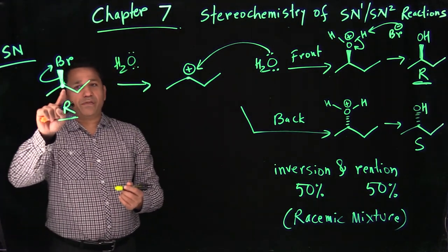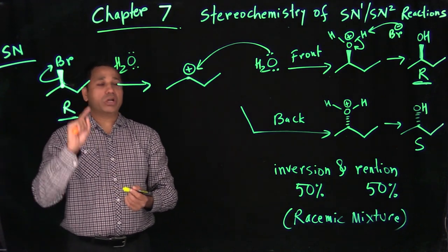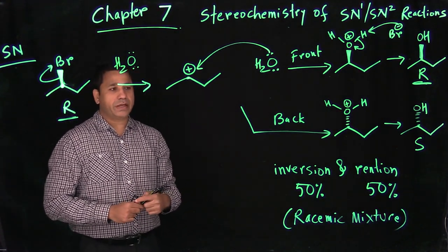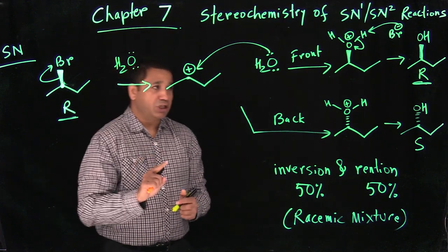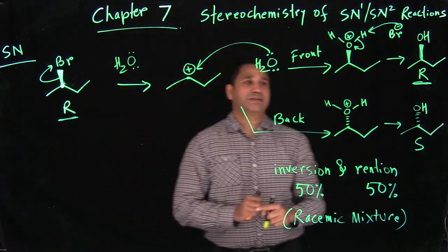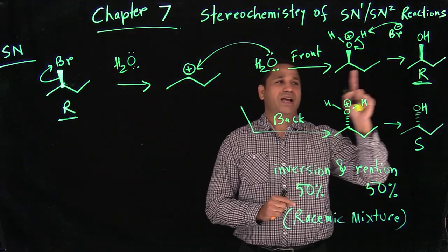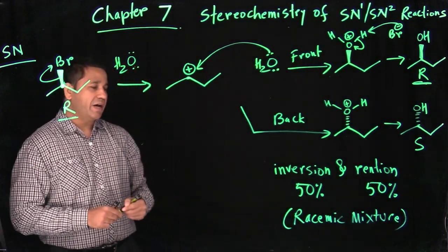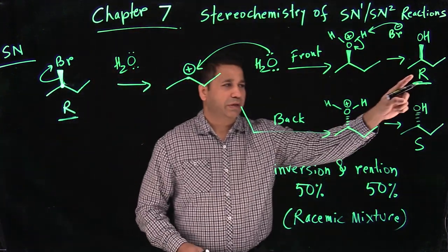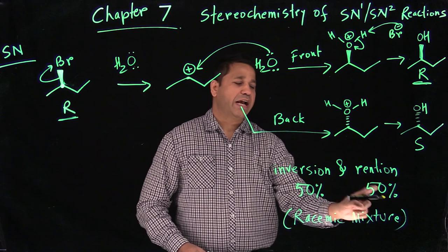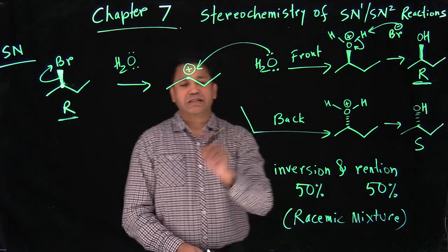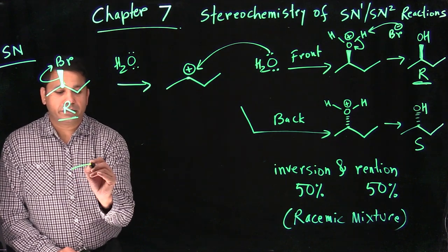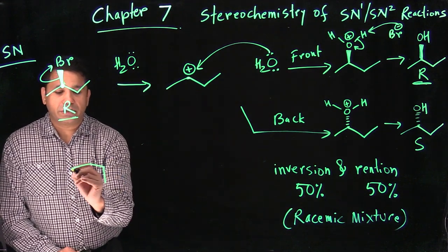So when you have a stereogenic carbon, you also have to pay attention to stereochemistry. In SN2, you only get one product — inversion. In SN1, you get two products — inversion and retention.